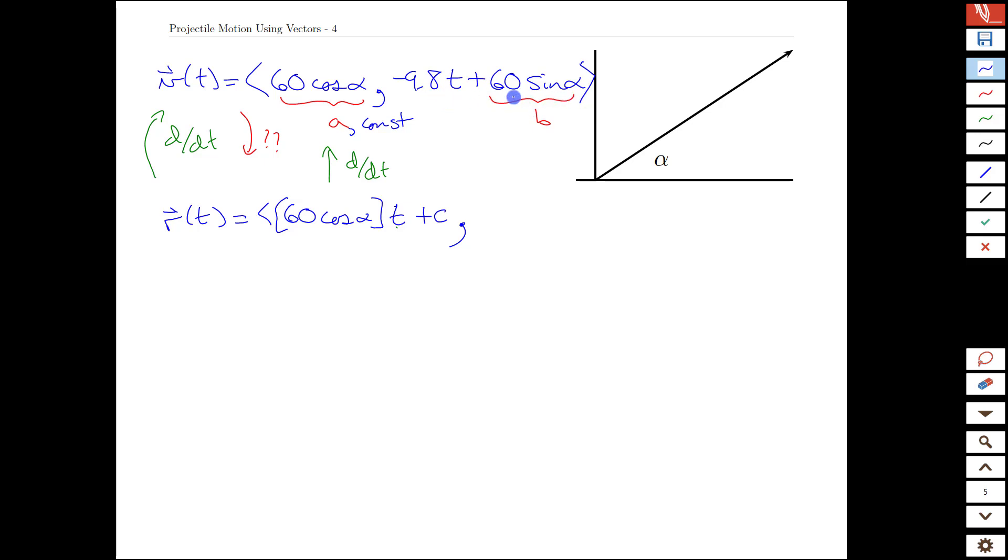And then continue on. The y value is a little more complicated, simply because of this t already in there. And if you think about the ways we would get -9.8t will be something like -9.8t squared. If we differentiate that, we would get, oh, we won't get -9.8t, we'll get 2 times -9.8t. So if we just do a little fudging factor here. If we differentiate this now, the 2 will come down and cancel, and we would be left with -9.8t. Perfect.